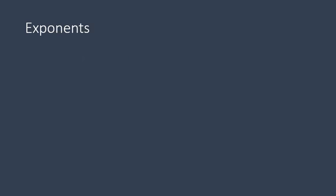Now I want to talk about exponents. The first thing we need to understand is that x times x gives us x to the power of 2 — x squared. The biggest mistake people make is to say x times x is 2x, and that's not true. It's x to the power of 2, and you need to understand that moving forward.